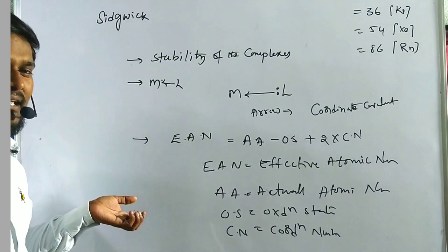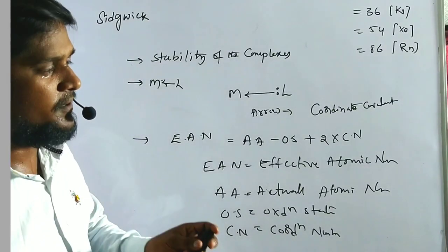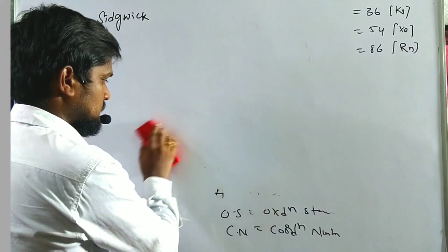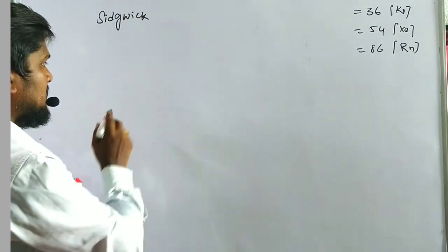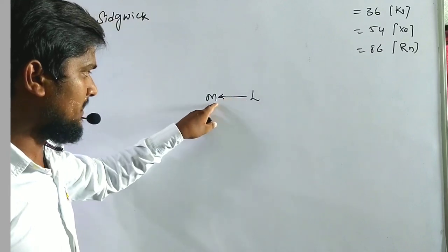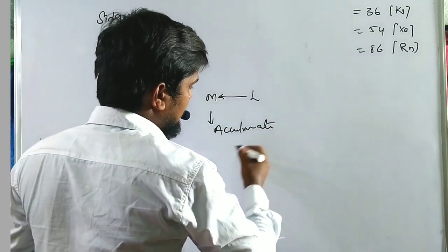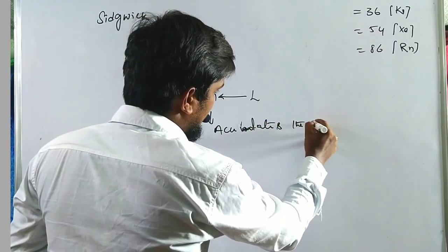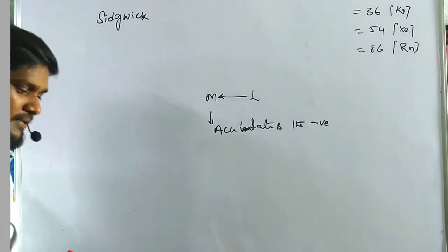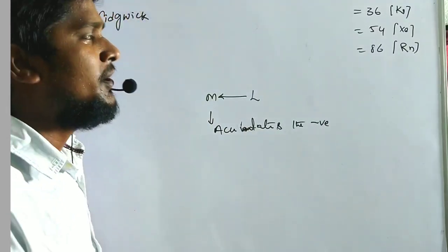The main purpose of Sidgwick theory is to find the stability of complexes. Nowadays, the alternative theory is the 18-electron rule, which is more widely used for the stability of complex compounds. However, Sidgwick theory has one limitation: when a ligand approaches the central metal atom and donates its pair of electrons, the metal accumulates negative charge, causing less stability. This was later explained by Pauling's electroneutrality method.